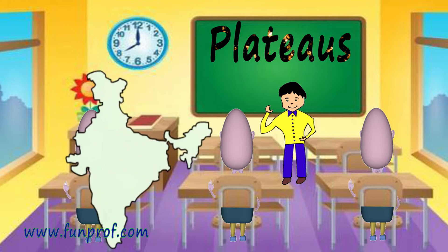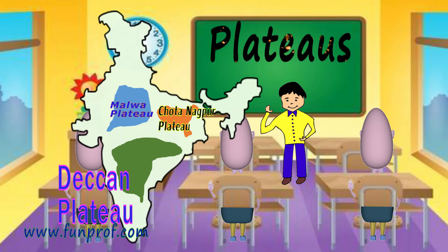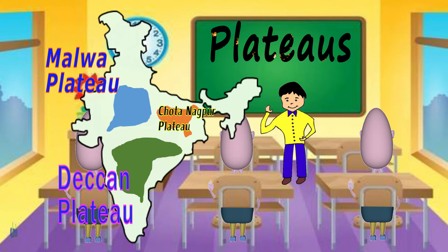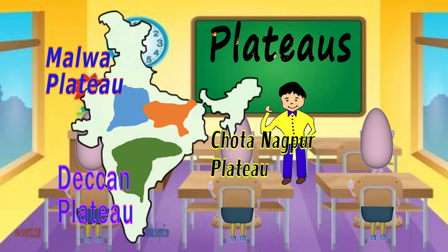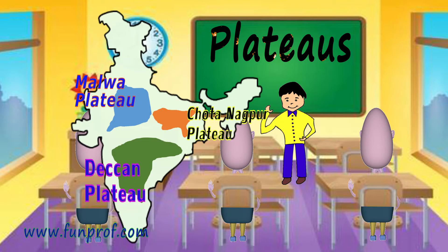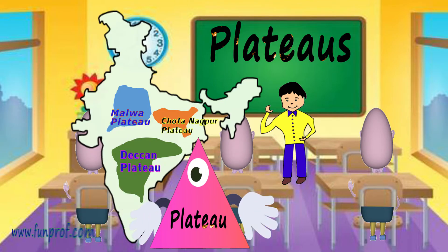Now about plateaus. The Deccan Plateau is in between. The Malwa Plateau is in the northwest of the Deccan Plateau. The Chhota Nagpur Plateau is in the northeast of the Deccan Plateau. When they are joined, they form a big triangular-shaped plateau.